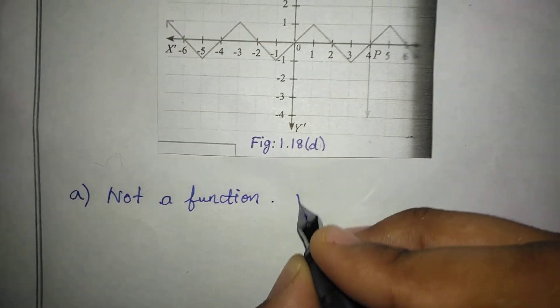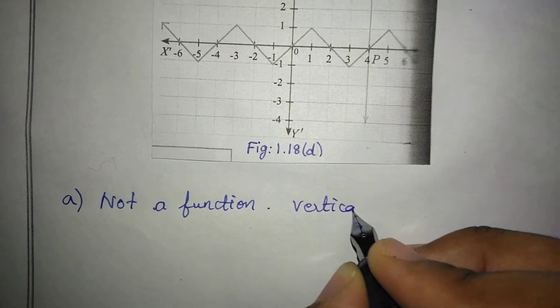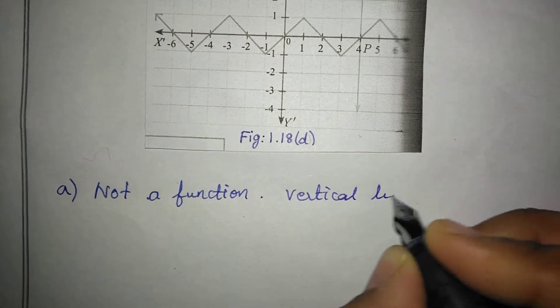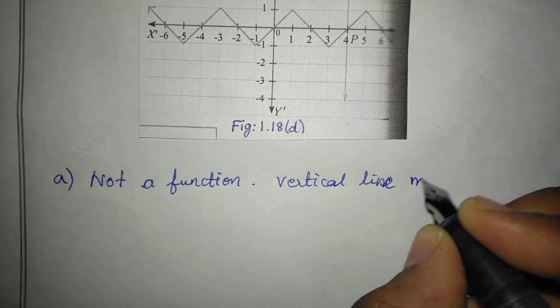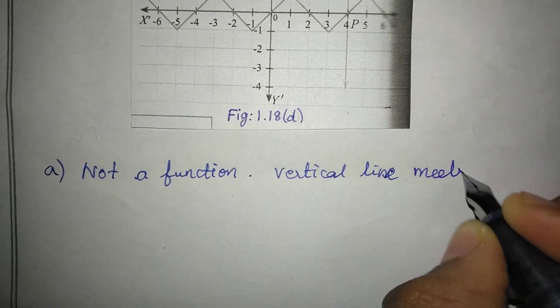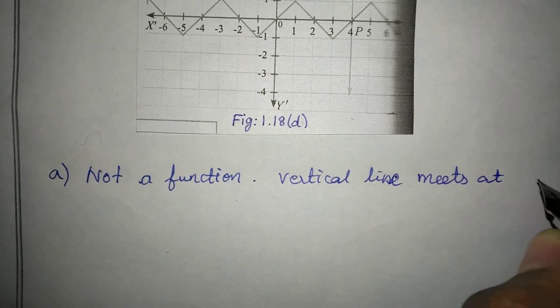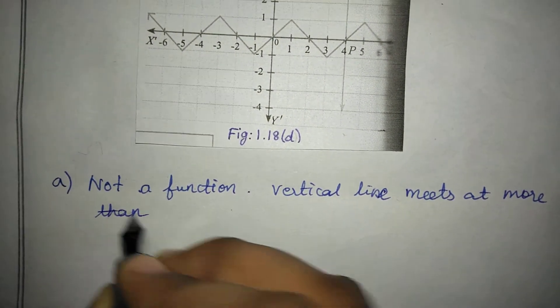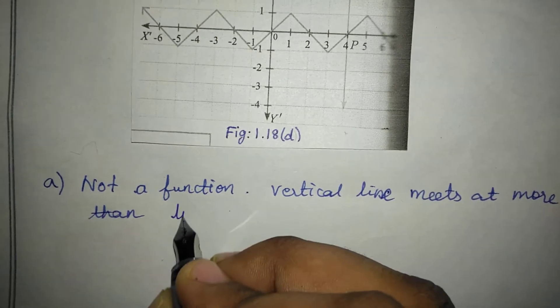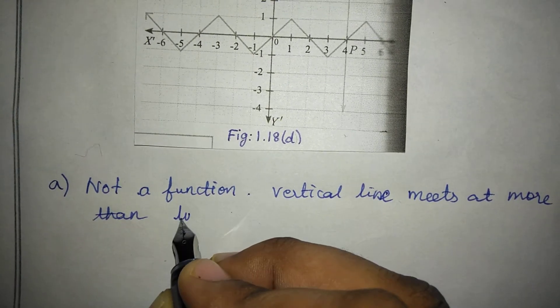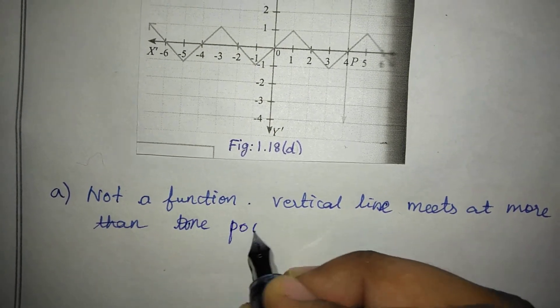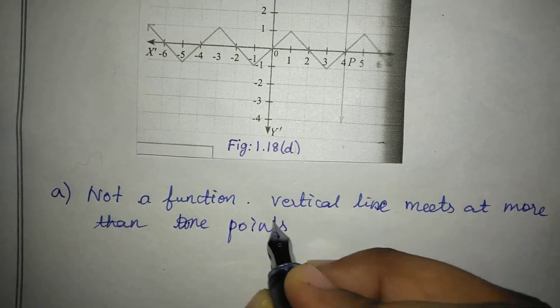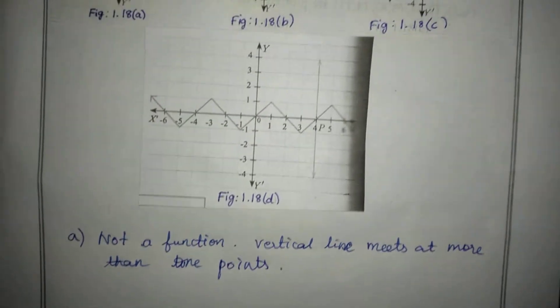For A, what do you see? The vertical line meets at more than one point. More than one point — so this is not a function.